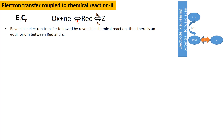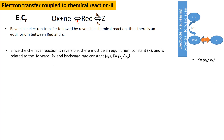Here we are considering first the electrochemical reduction of the starting material ox to form red, which forms product Z via a reversible chemical reaction, and an equilibrium exists between red and Z. Since the chemical reaction is reversible, there must be some equilibrium constant, expressed as the ratio of the forward rate constant Kf and the backward rate constant Kb — that is, K equals Kf divided by Kb.